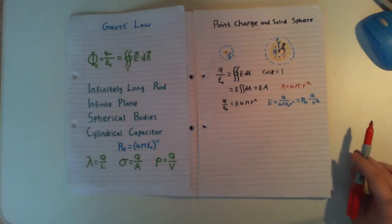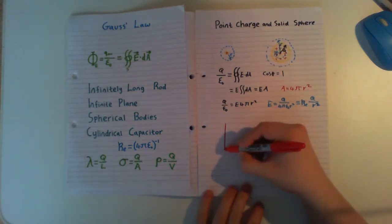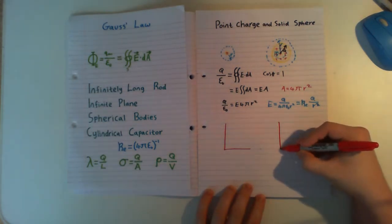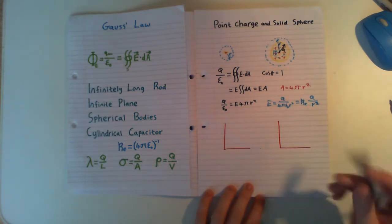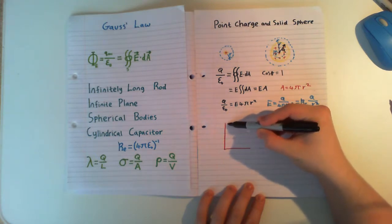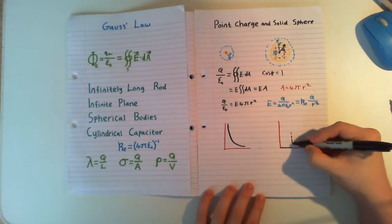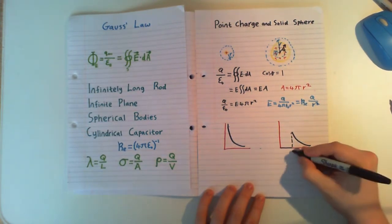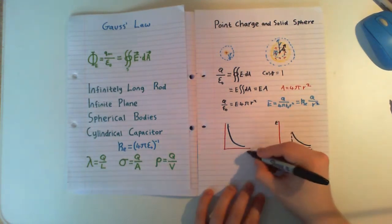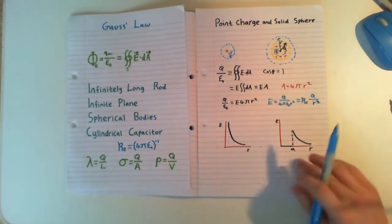If we take a Gaussian surface outside, we can see it's exactly the same as the point charge. If we graph both of these, for the point charge we have a one-over-R-squared dependence coming down as normal. For the conducting sphere, we draw to the point A, and then it follows the same decay. The math for this is very straightforward, so we'll move on to the much harder version — the non-conducting solid sphere.